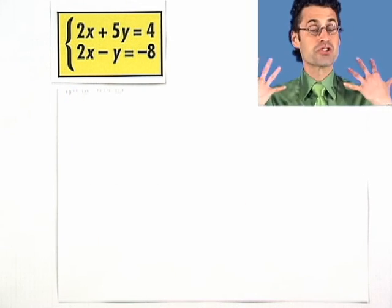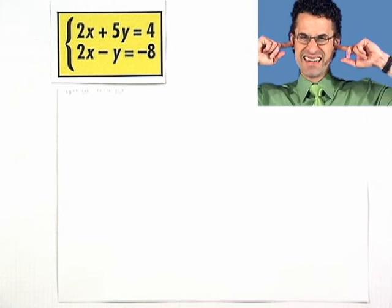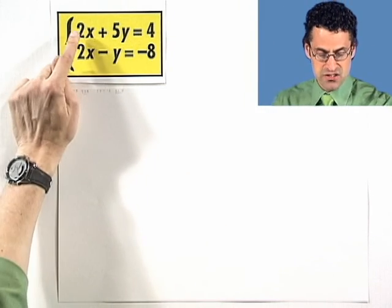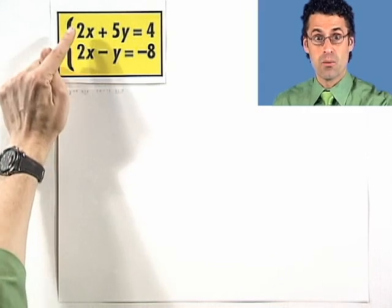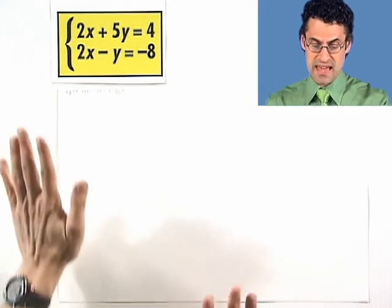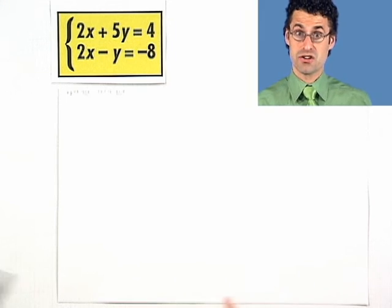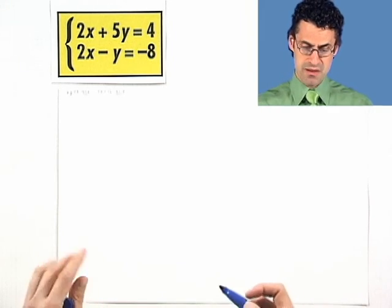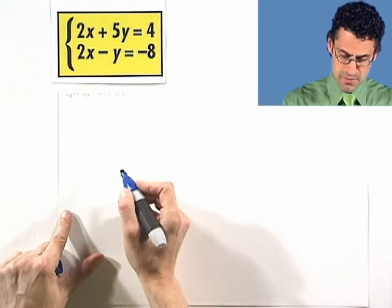Now, to me this is screaming out for elimination. I don't want to put my fingers in my ears because it's so loud. I see a 2x and a 2x. When I see that together, that tells me that cosmic coincidence can be used to our advantage. So instead of using substitution, I'm thinking elimination. Here's what I'm going to do first.